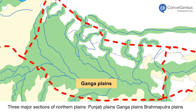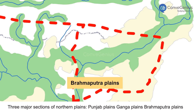2. Ganga Plains: The middle section lies between the Ghaggar and Tista rivers. It is drained by rivers Ganga, Yamuna, Ghagra, Gandak, Kosi, and Tista from the Himalayas, and Chambal, Betwa, Son, and Damodar from the plateau in the south. 3. Brahmaputra Plains: The eastern section of the northern plain lies in Assam.